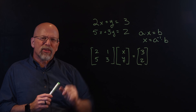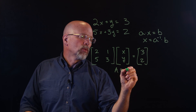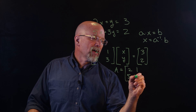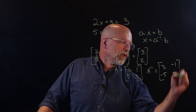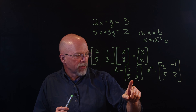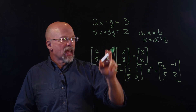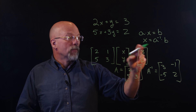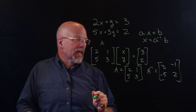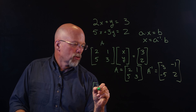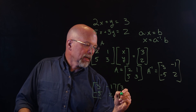Could I do the same thing here? In the previous lesson, we saw that if A equals [2, 1; 5, 3], then A inverse equals [3, -1; -5, 2], because multiplying those two matrices gives the identity matrix. So I can take A inverse and multiply it by the vector [3, 2].